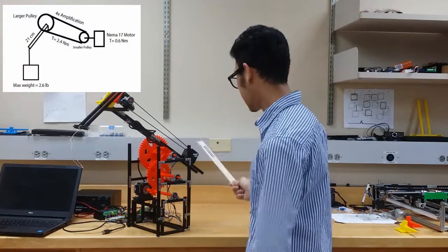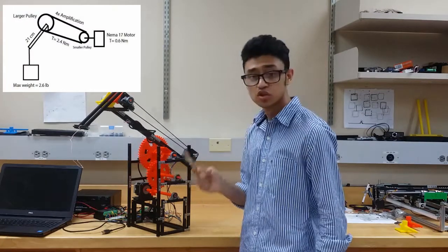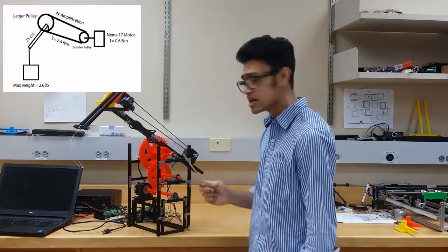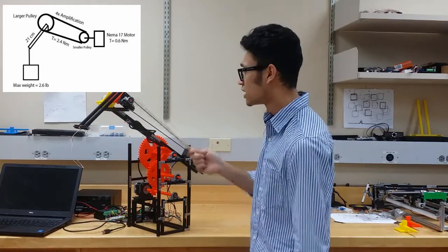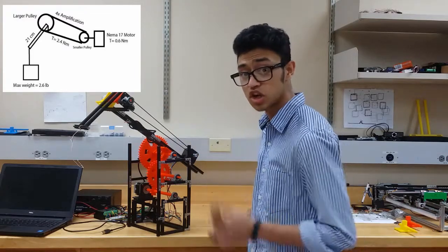The torque of this NEMA17 stepper motor is 0.6Nm and the arm over here is 21cm long. The NEMA17 is attached to a smaller pulley and the arm is connected to a larger pulley. The pulley has a torque amplification ratio of 4 times.